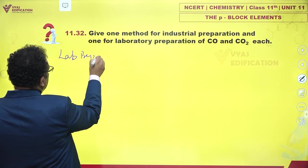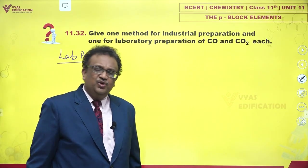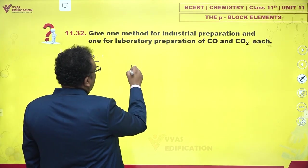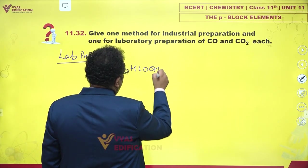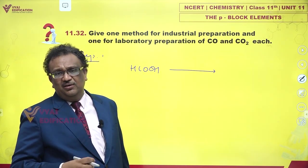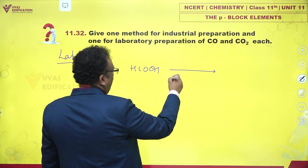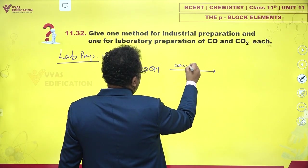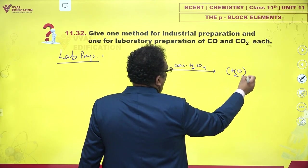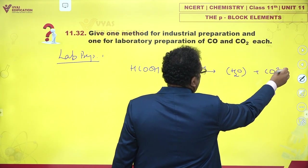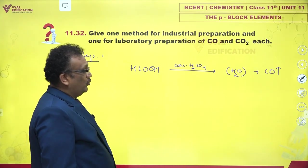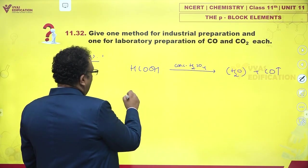Lab preparation can be done in test tubes and should be easy to do. You take formic acid, and if you dehydrate formic acid using any dehydrating agent like concentrated H2SO4, it removes water and you get CO. This is one way of obtaining carbon monoxide in the lab.